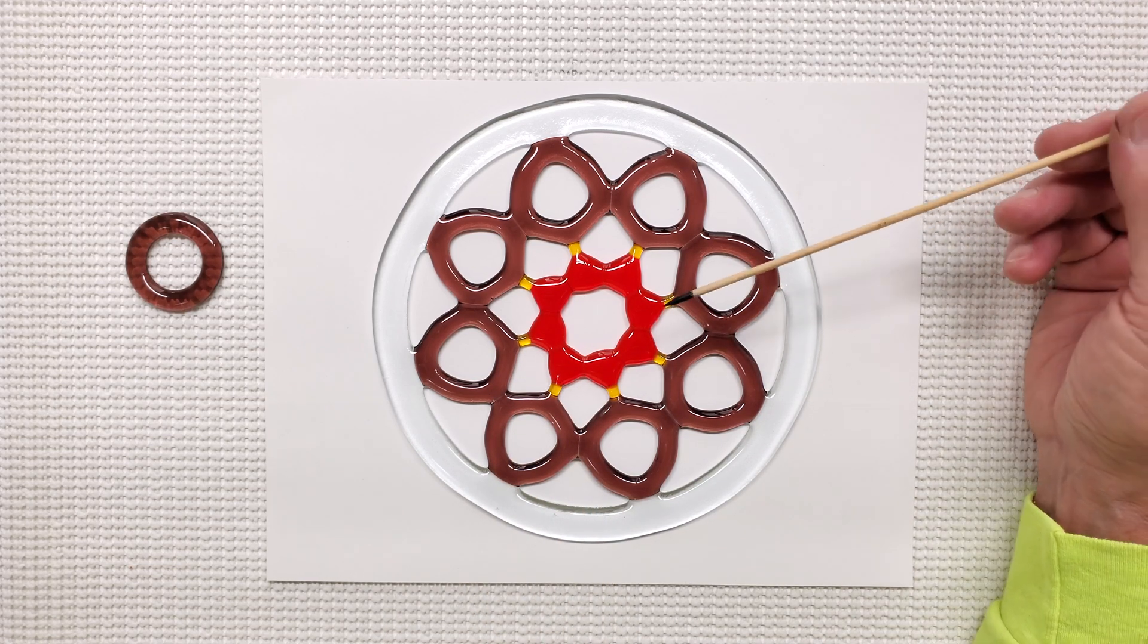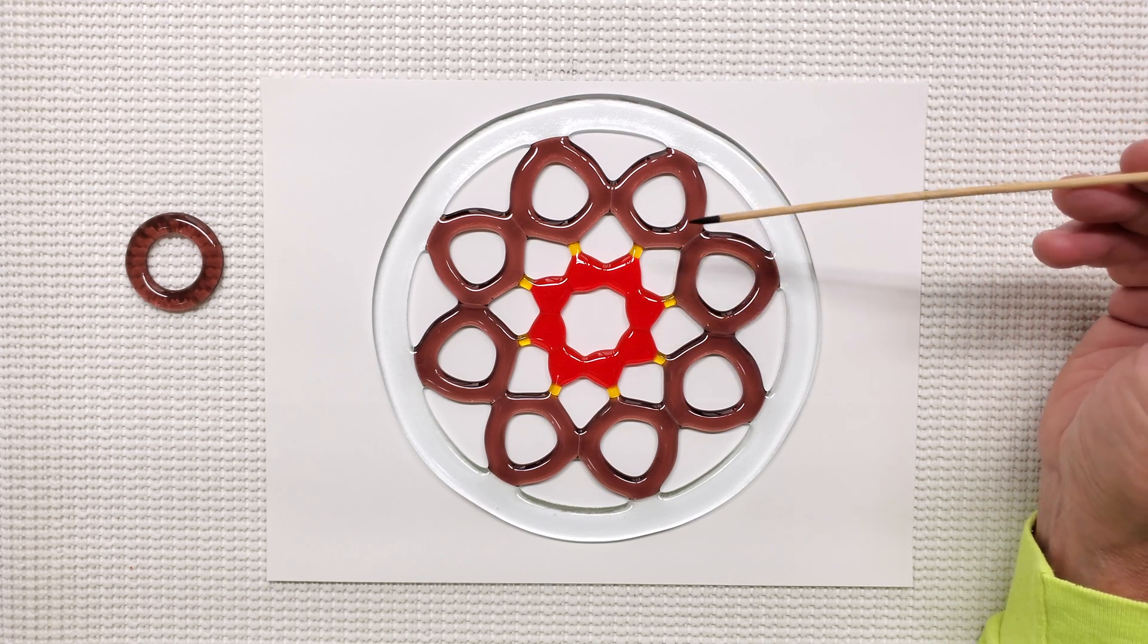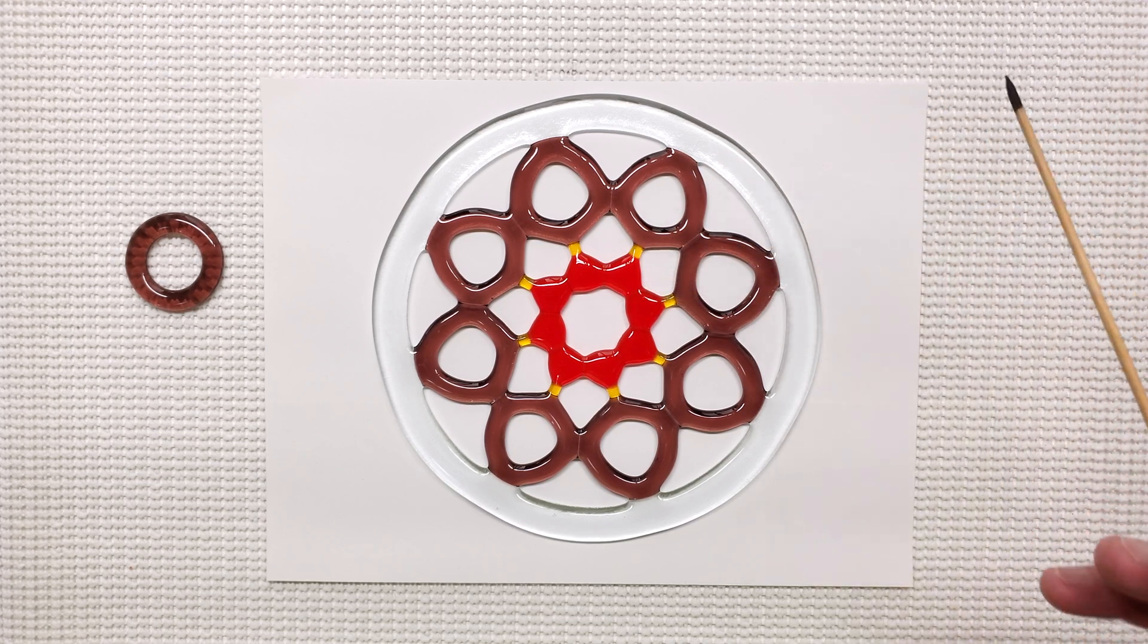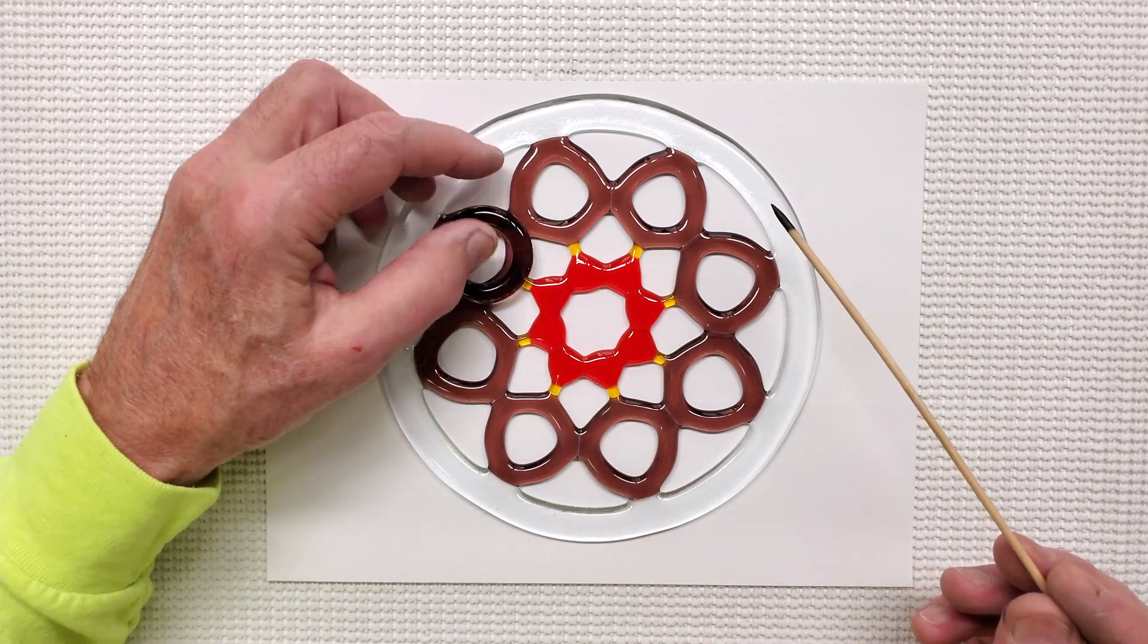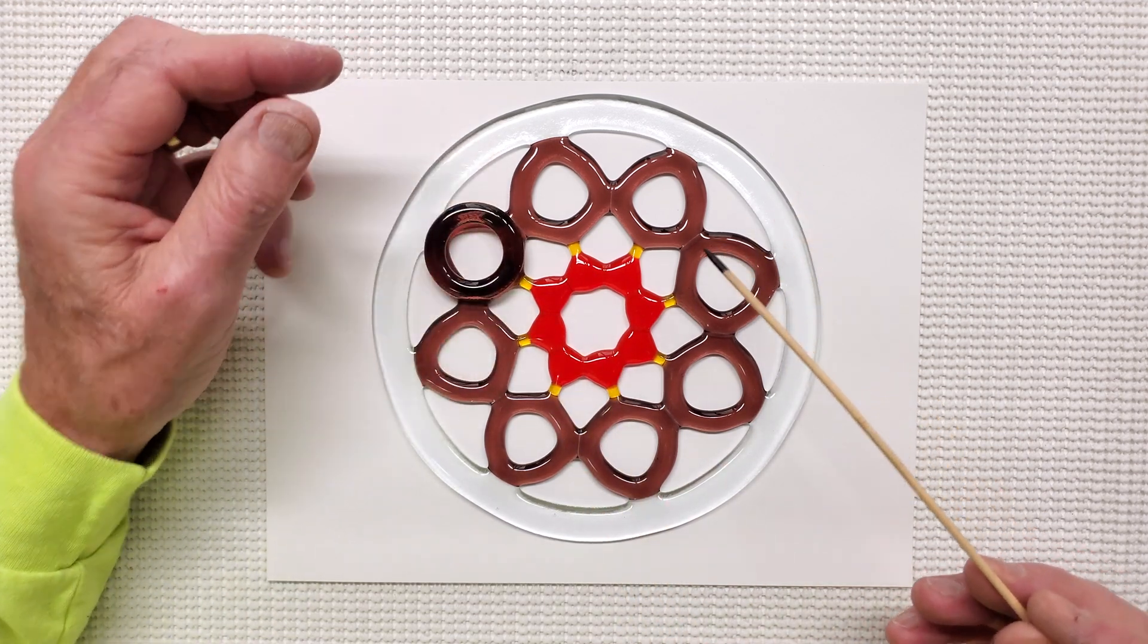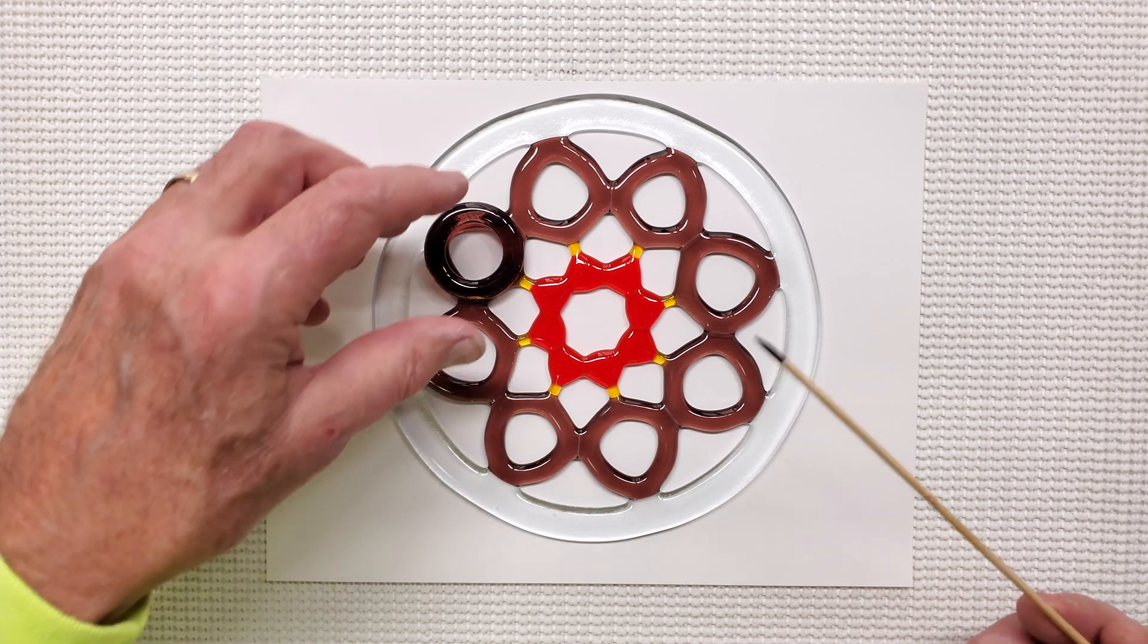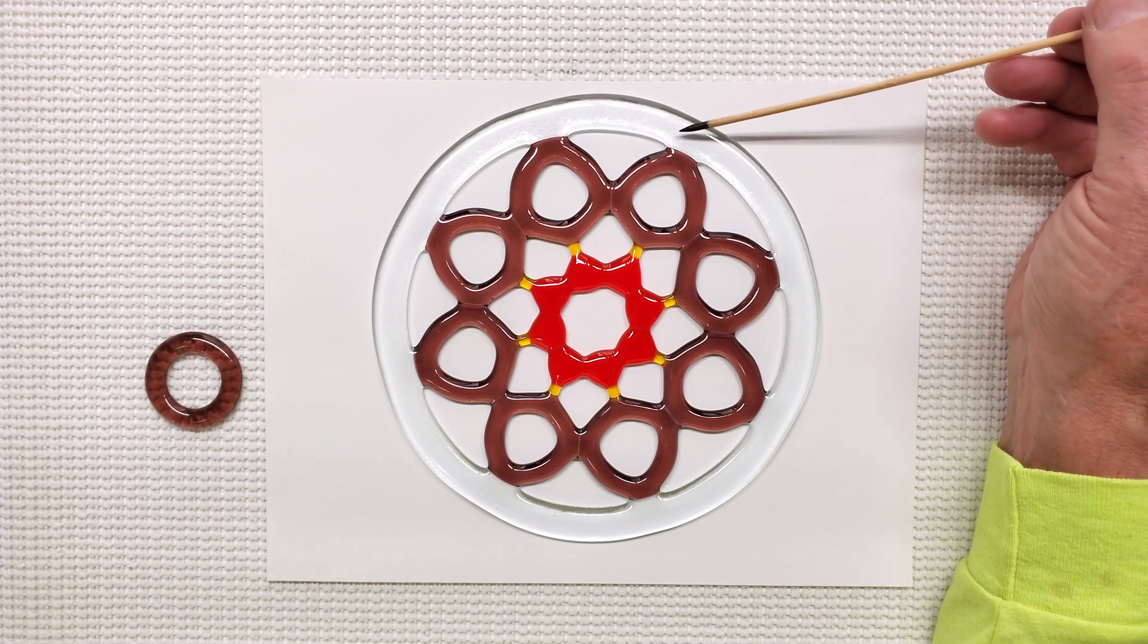One thing I enjoy about fusing glass pieces together with spaces in the design is seeing the distortion of the glass caused by viscosity and the shapes that evolve in between the pieces of glass. Here you can see how our purple ring was distorted into a new shape.